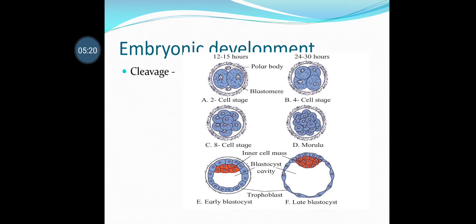Embryonic development begins immediately after fertilization. Within 12 to 15 hours, blastomeres are present — the cells formed by cleavage are called blastomeres. In picture A you can see the two-cell stage. In picture B, the four-cell stage is formed within 24 to 30 hours. In picture C, the eight-cell stage is formed — this eight-cell stage is called cleavage.